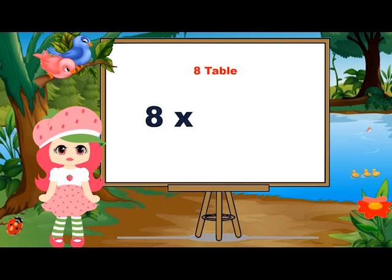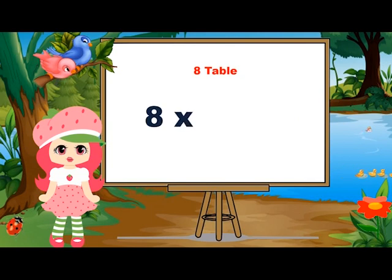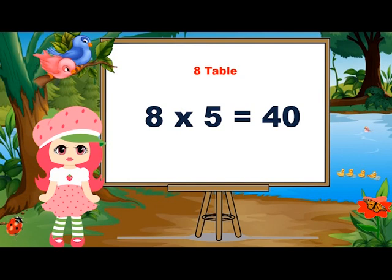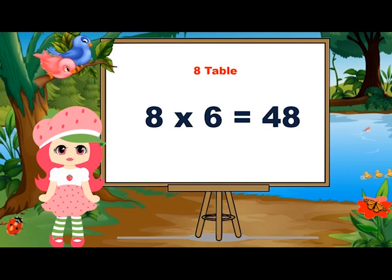Eight fours are thirty-two. Eight fives are forty. Eight fives are forty. Eight sixes are forty-eight. Eight sixes are forty-eight.